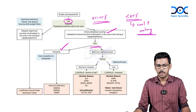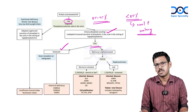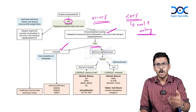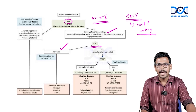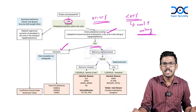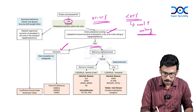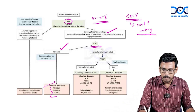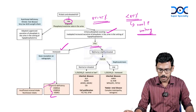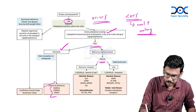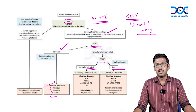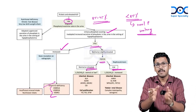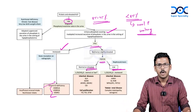Once renal phosphorus wasting is diagnosed, differentiate based on PTH. Elevated PTH in the setting of hypophosphatemia suggests a vitamin D-related cause — vitamin D causes reabsorption of both calcium and phosphorus, so vitamin D deficiency results in hypophosphatemia, hypocalcemia, and elevated PTH. This includes vitamin D deficiency and vitamin D-dependent rickets types 1a, 1b, 2, 3, etc. When PTH is normal, consider FGF23-dependent or independent causes.